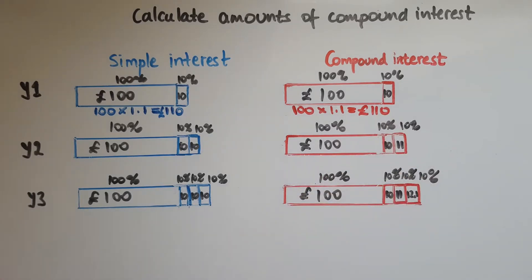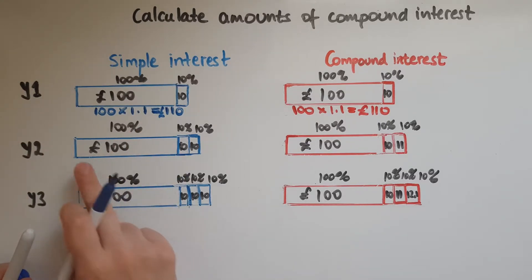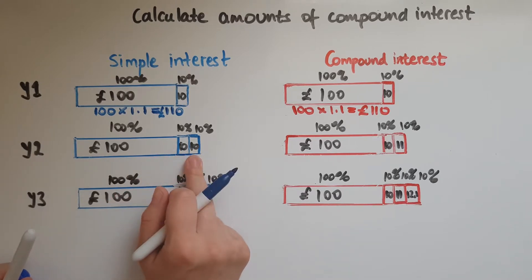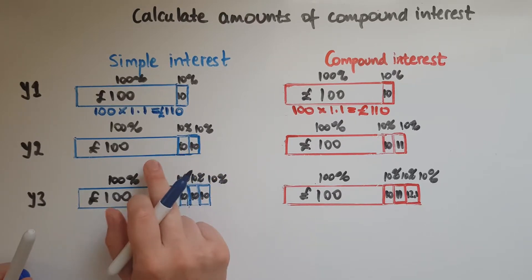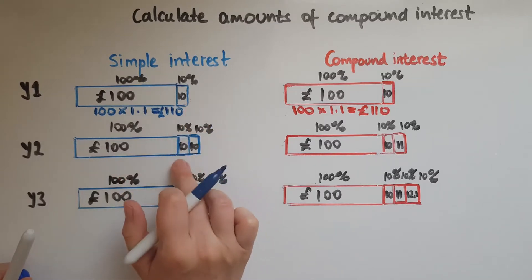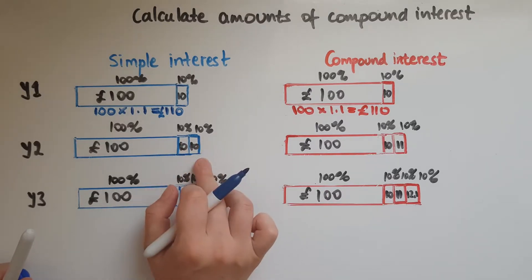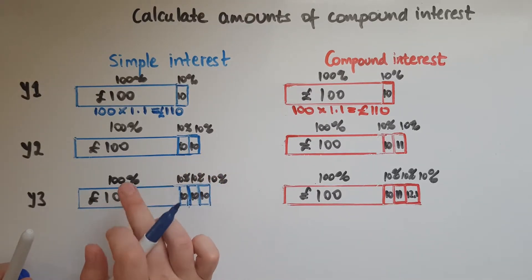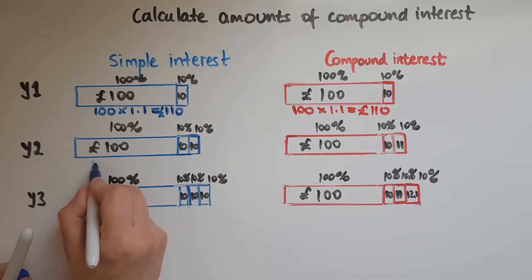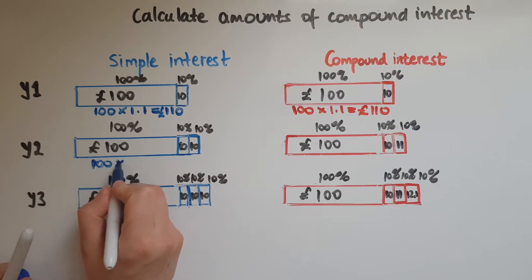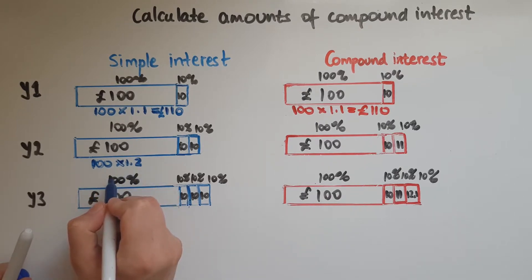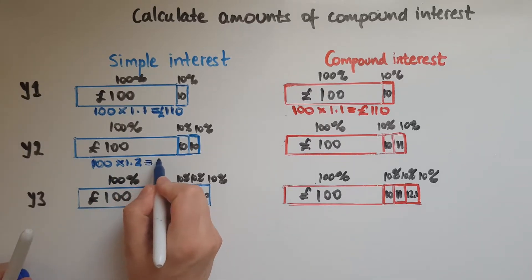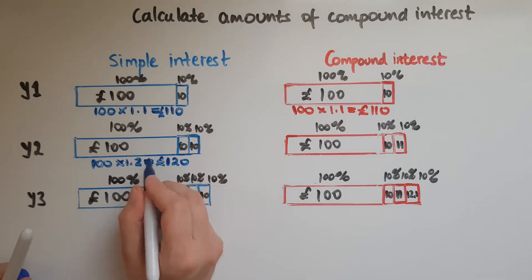In year two with simple interest, you get the hundred pounds plus ten pounds plus another ten pounds, because you get ten percent no matter what. The amount of interest doesn't change. To work it out, we take the initial amount times one point two — because it's a hundred and twenty percent in total — which gives us one hundred and twenty pounds.